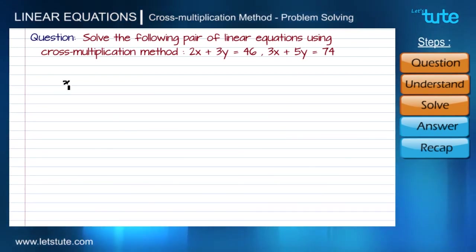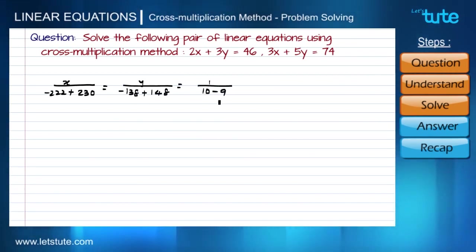When we calculate, we get x upon -222 + 230 equals to y upon -138 + 148 equals to 1 upon 10 - 9. Solving further we get x upon 8 equals to y upon 10 equals to 1 upon 1. These three terms are equal.